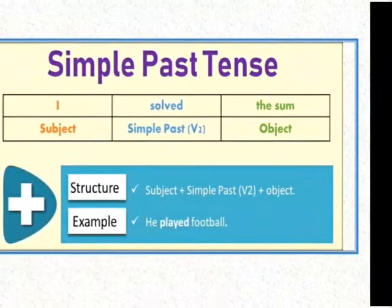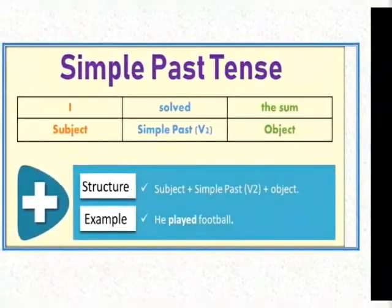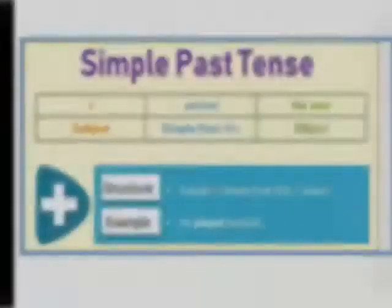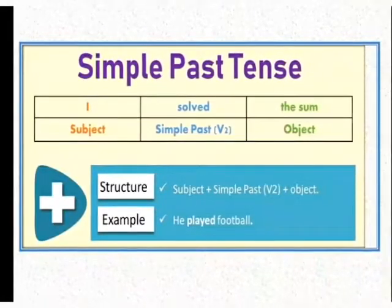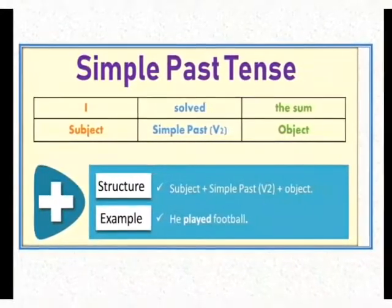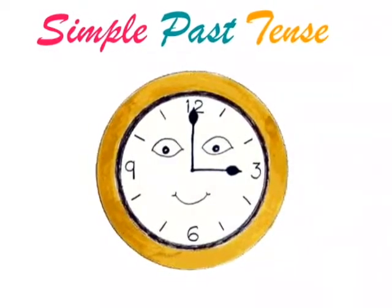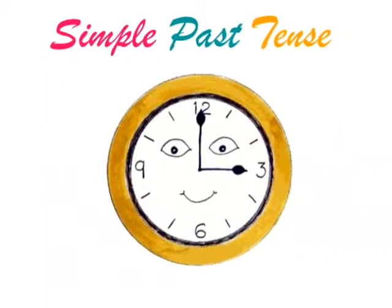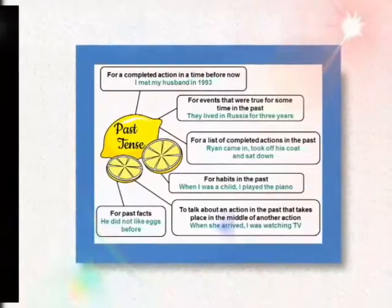'He played football.' He is the subject, play is the verb, and the second form of play is 'played' — so 'He played football' is a sentence in simple past tense. In simple past tense, if there are fill-in-the-blank questions, you just have to write the second form of the verb given to you in the bracket.